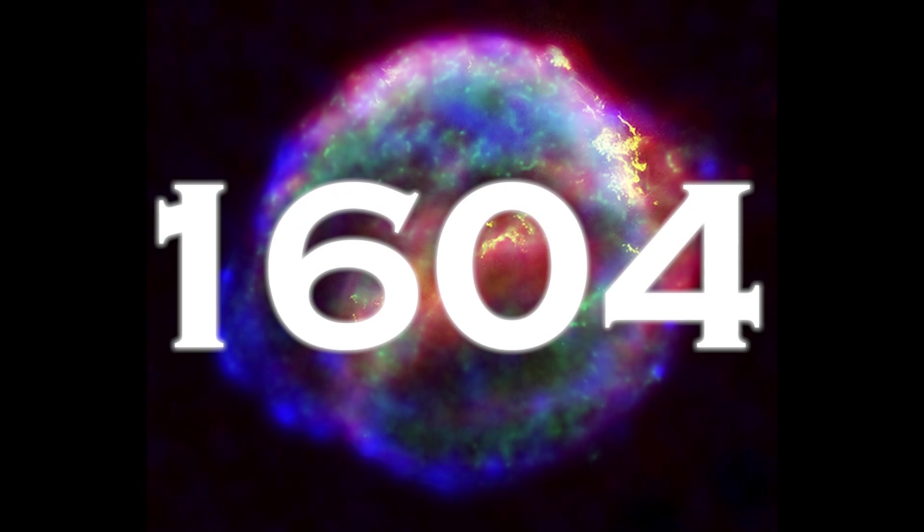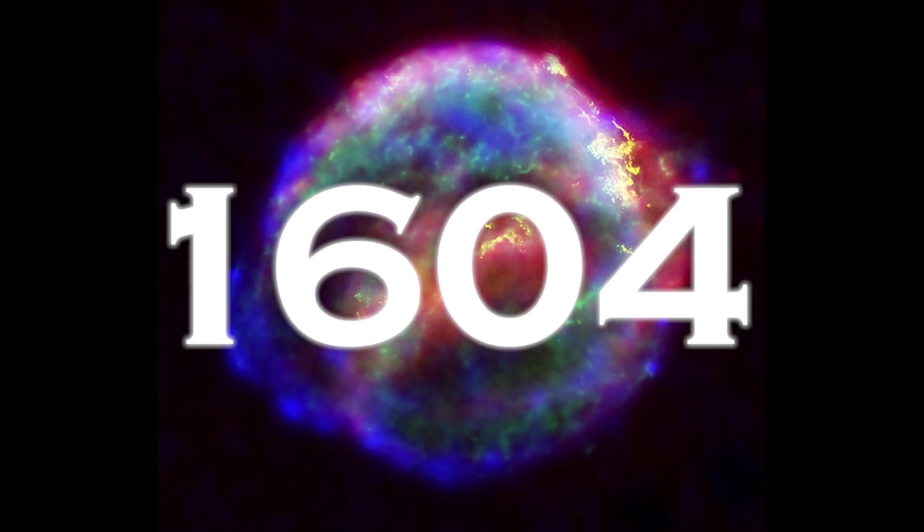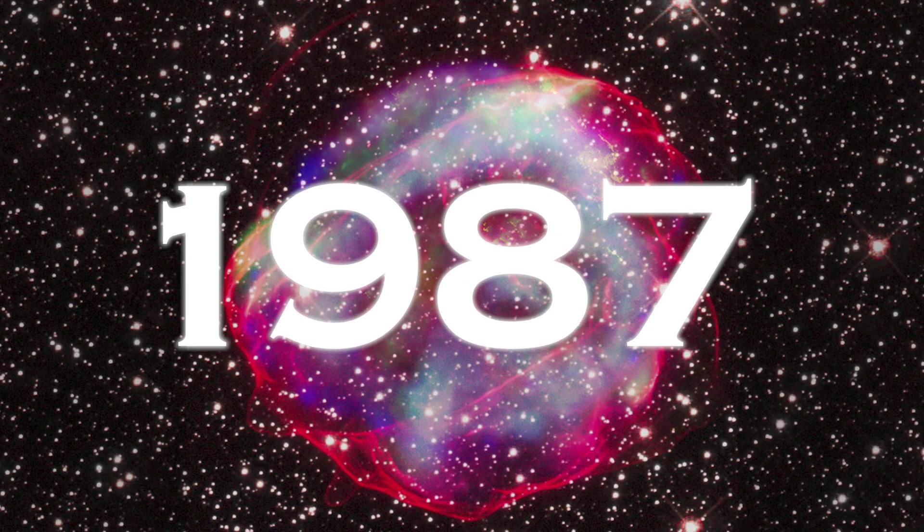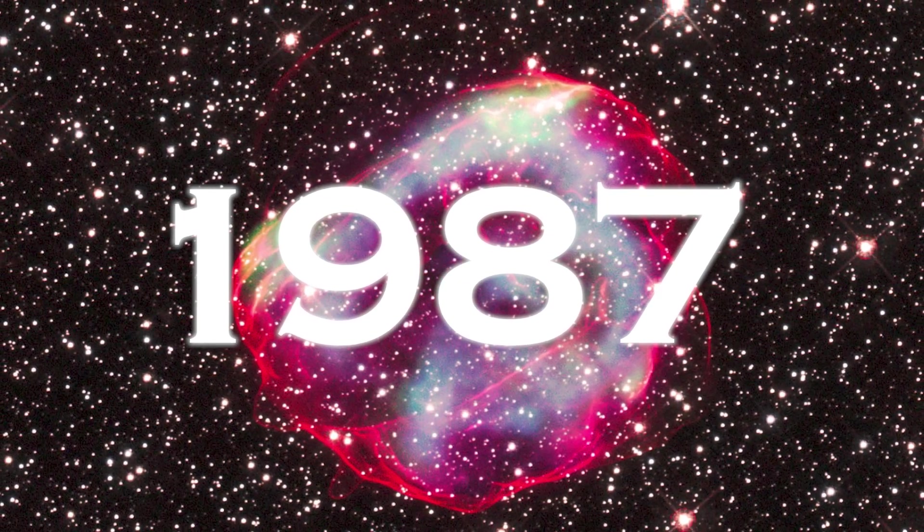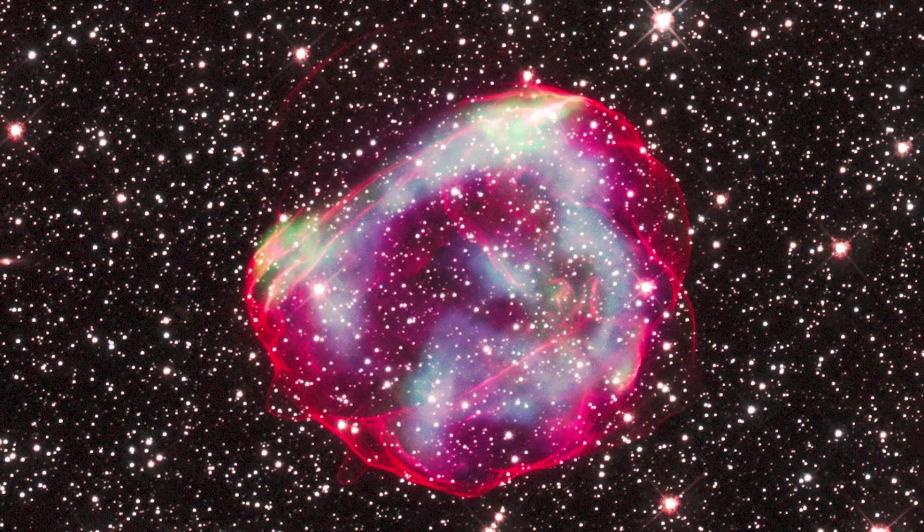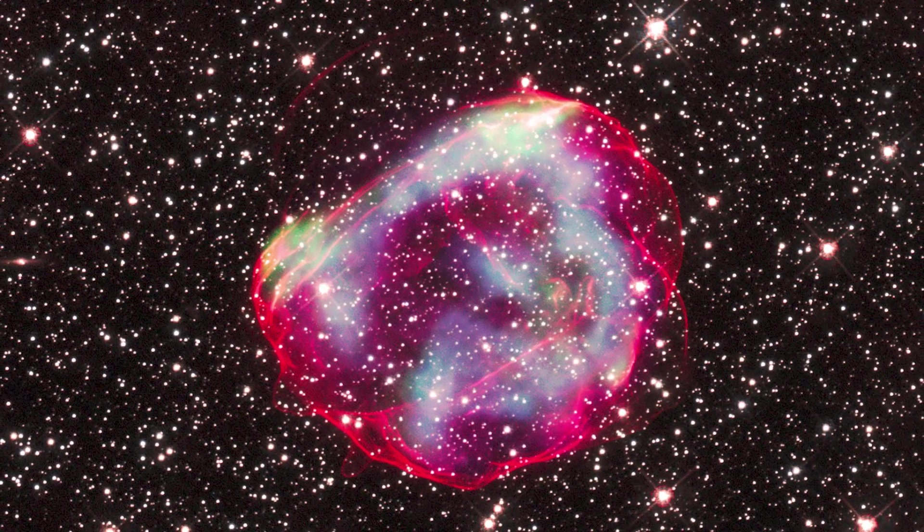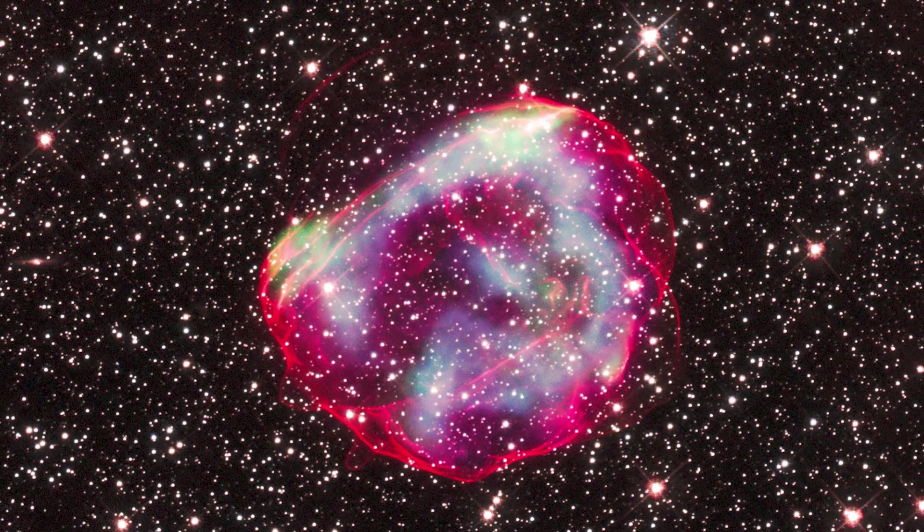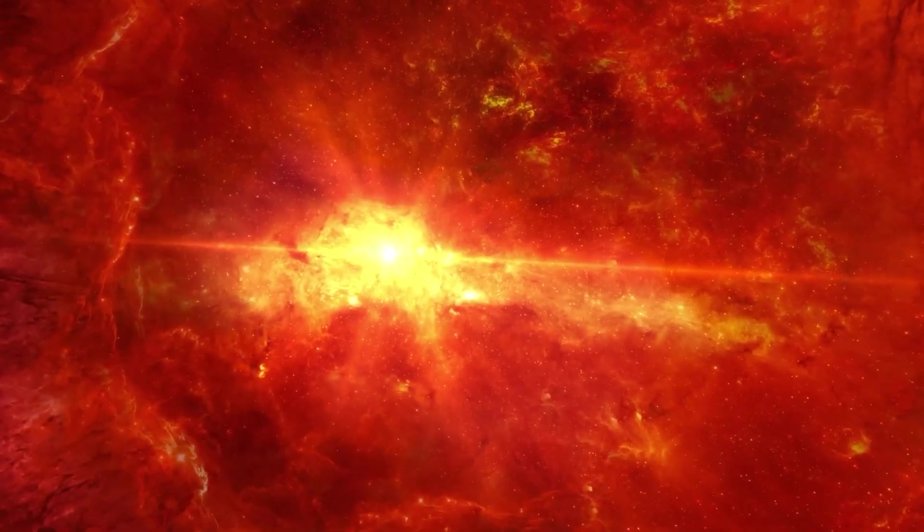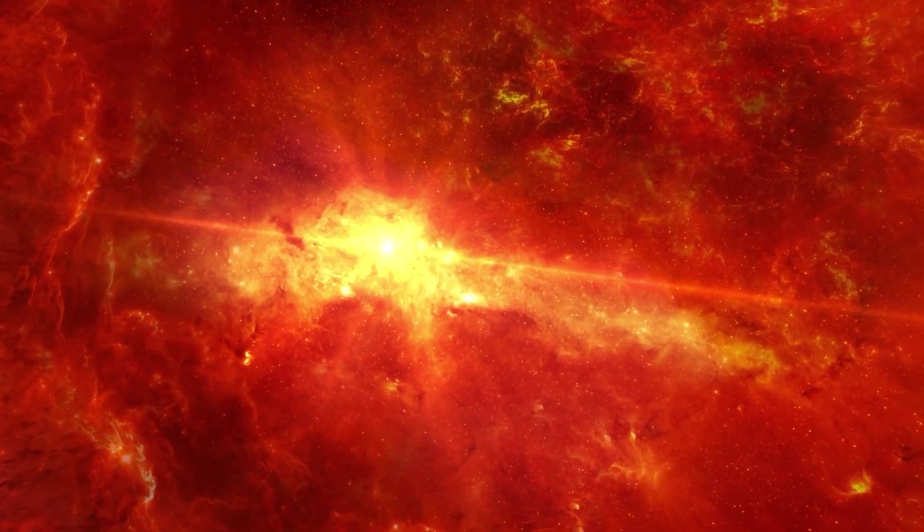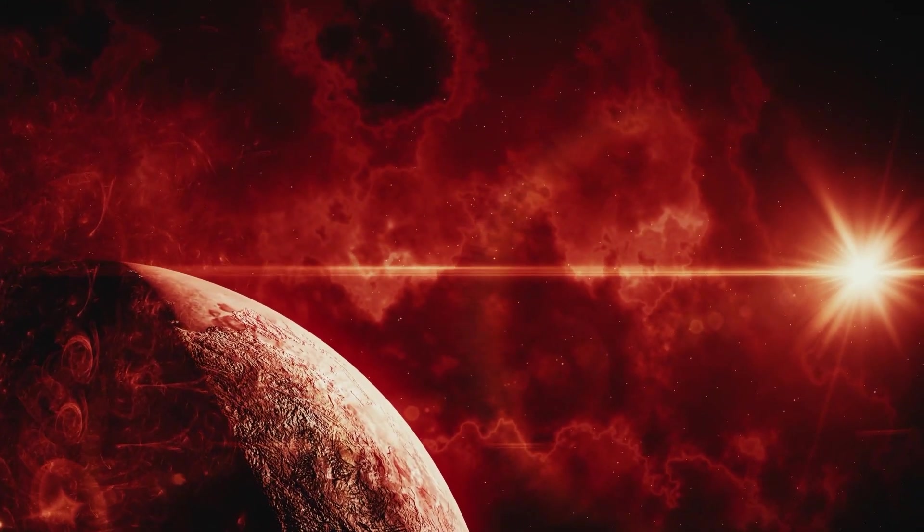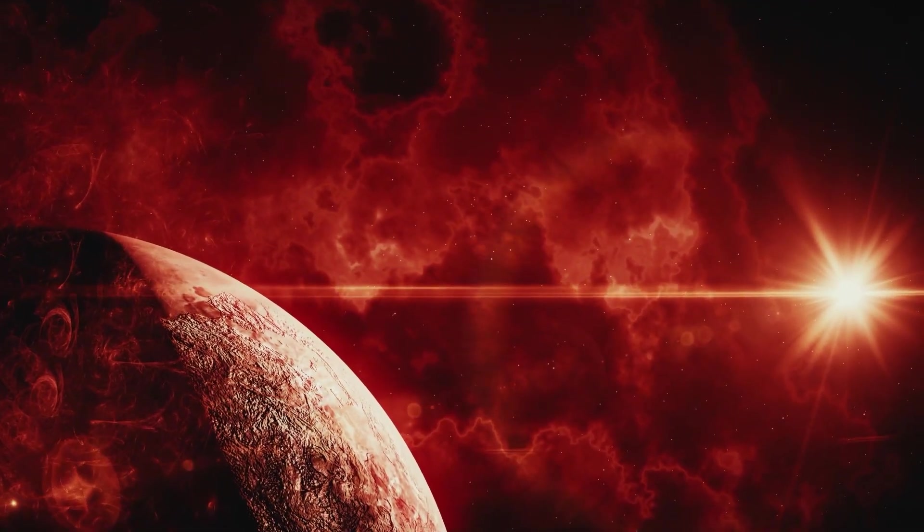Since 1604, we have not yet witnessed a supernova in our own galaxy, although in 1987 one occurred in the Large Magellanic Cloud at a distance of 169,000 light years, with remarkable effects, although it did not pose a direct risk to us. The danger zone around a typical supernova is an intriguing concept that could have serious implications if such an explosion were to occur in our vicinity.